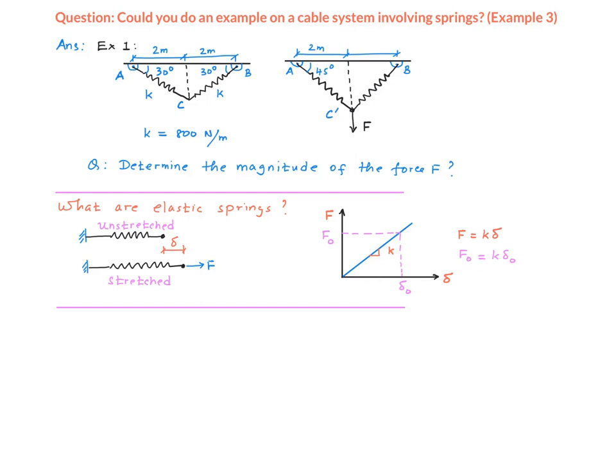It turns out that if this spring happens to be a linear elastic spring, then the relationship between F and delta is linear. Here is a graphical depiction of that. The relationship between F and delta is given by this straight line that passes through zero.